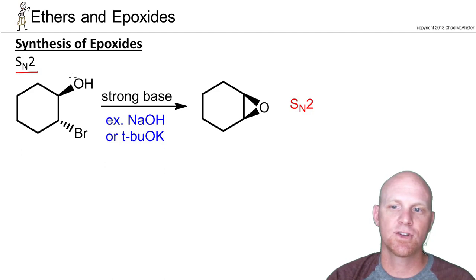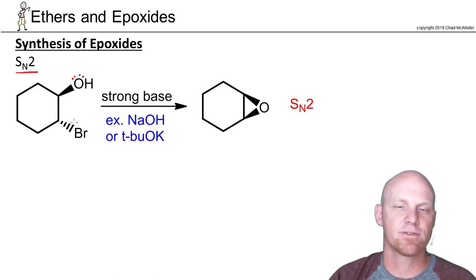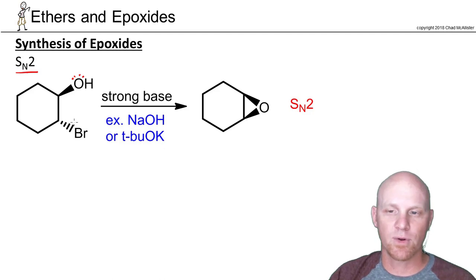And the only way we can do this by SN2, if it's on a ring anyways, is if we have the hydroxyl group here and the bromine in the trans configuration. So one's got to be a wedge, one's got to be a dash. Obviously if this weren't on a ring, we'd have free rotation.